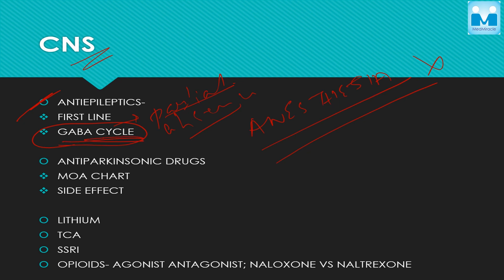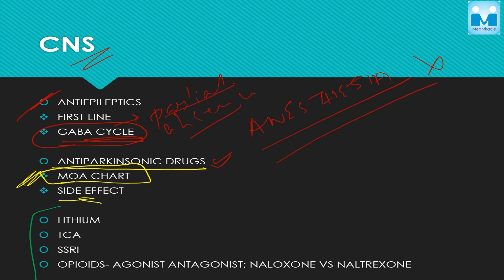Then coming to anti-Parkinsonism drugs — there is also a mechanism of action chart showing the sites where the drugs act. Side effects are also important, but mechanism of action is the most important point. Then there are some other drugs to know in depth: lithium, TCAs, SSRIs, and opioids. In opioids, they ask about agonists, antagonists, and the difference between naloxone and naltrexone — this is very important. Most people leave it out, but opioid agonist-antagonist examples are essential.